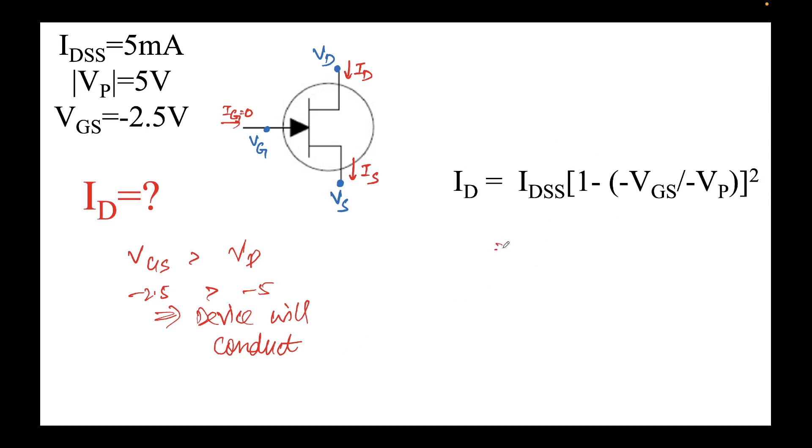We will simply plug in the values. IDSS is nothing but 5 milliamps times 1 minus—so minus VGS, this will be minus times minus 2.5 divided by minus 5 whole square.